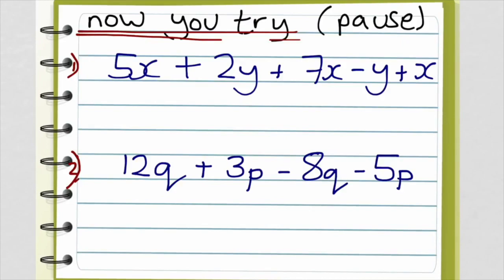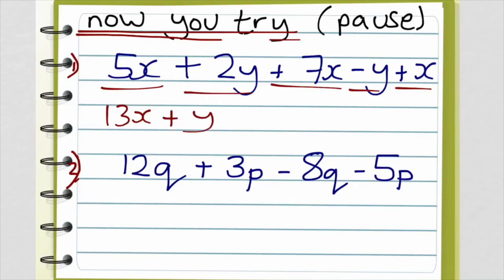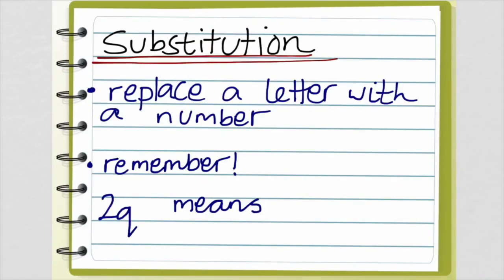Alright, now it's your turn. You try these two questions and pause the video. Okay, now that you've had a go at those, see if you've done them correctly. To collect up all of these terms, I look at the x's first: 5x plus 7x plus 1x altogether makes 13x. Then 2y minus y is plus 1y. For number 2, look at the q's first: 12q minus 8q is 4q. Then 3p minus 5p — we're going into negative numbers — minus 2p. So that's collecting like terms.